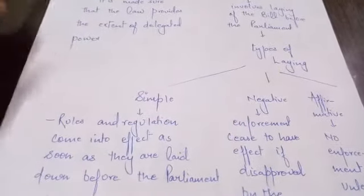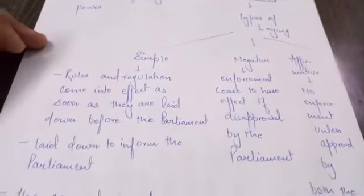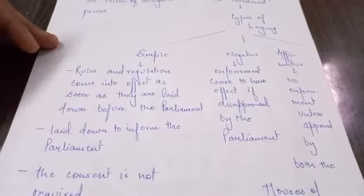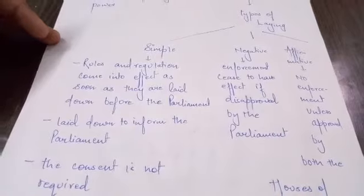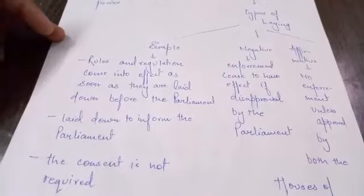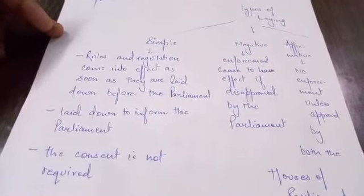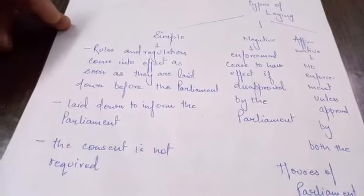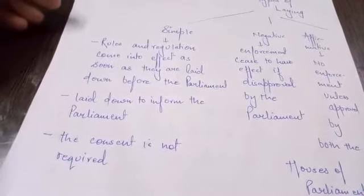The types of laying are: simple, negative, and affirmative. Simple laying means rules and regulations come into effect as soon as they are laid before parliament — parliament's consent is not strictly required, but they are laid before parliament just to inform it. Negative laying means rules come into effect immediately like simple laying, but if parliament disapproves, the enforcement will cease to have effect. Under affirmative laying, rules and regulations cannot be enforced unless both houses of parliament approve them.